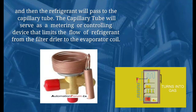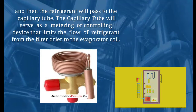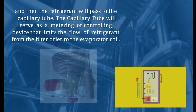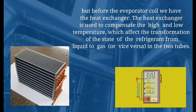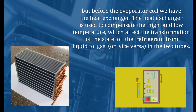And then the refrigerant will pass to the capillary tube. The capillary tube serves as a metering device or controlling device that limits the flow of refrigerant from the filter dryer to the evaporator coil. But before the evaporator coil, we have the heat exchanger, which is used to compensate the high and low temperature affecting the transformation of the state of the refrigerant from liquid to gas and vice versa.